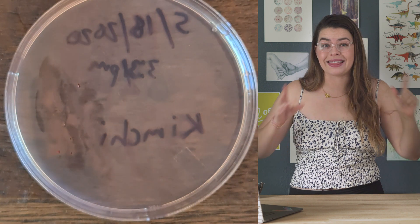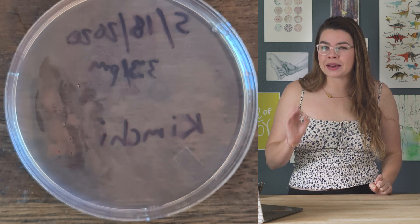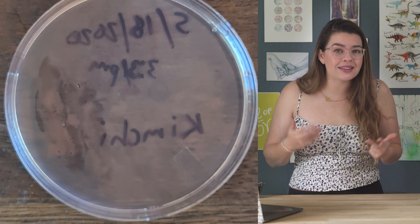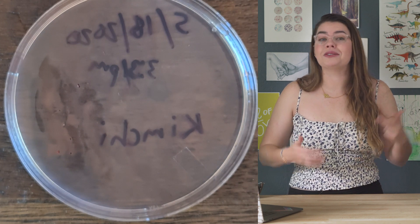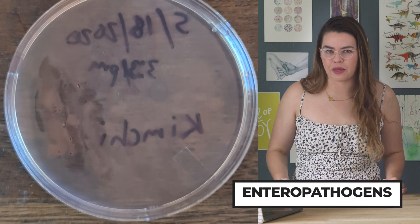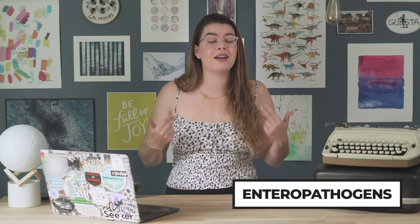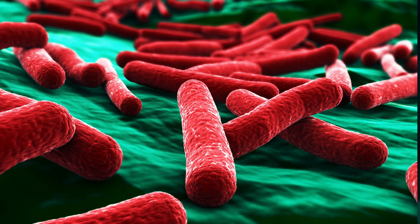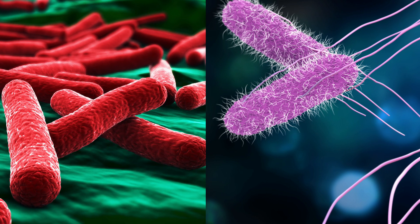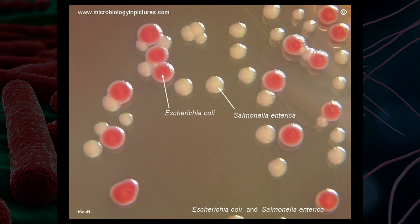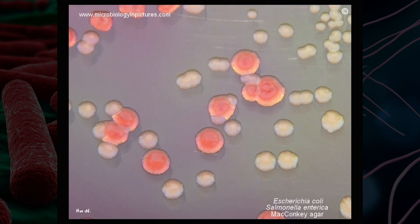On our MacConkey plate for our kimchi, we don't have a ton of growth, and that is actually a really good thing. Gram-negative bacteria likely found in food are likely to be what we call enteropathogens, which means they release toxins when they make their way into our digestive systems that can make us really sick. Some of the most common gram-negative bacteria in this context are kinds of E. coli and Salmonella species.